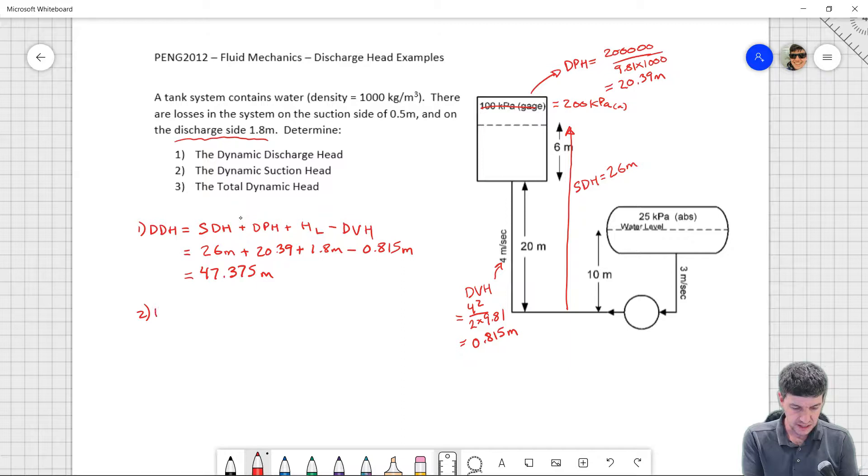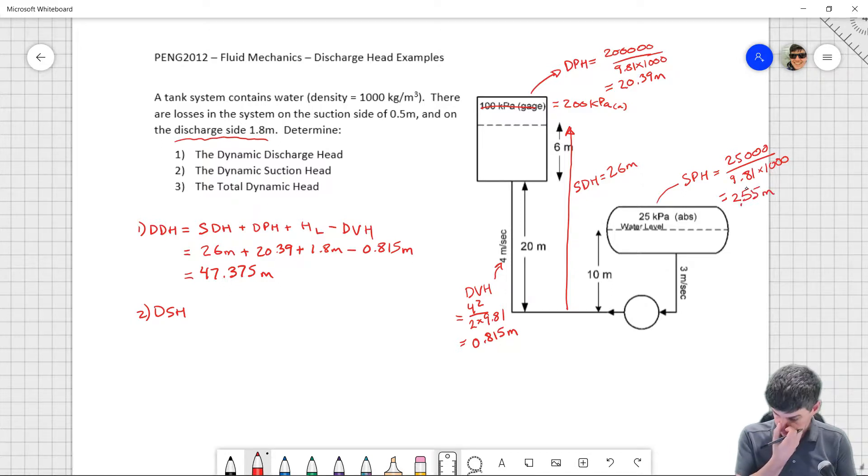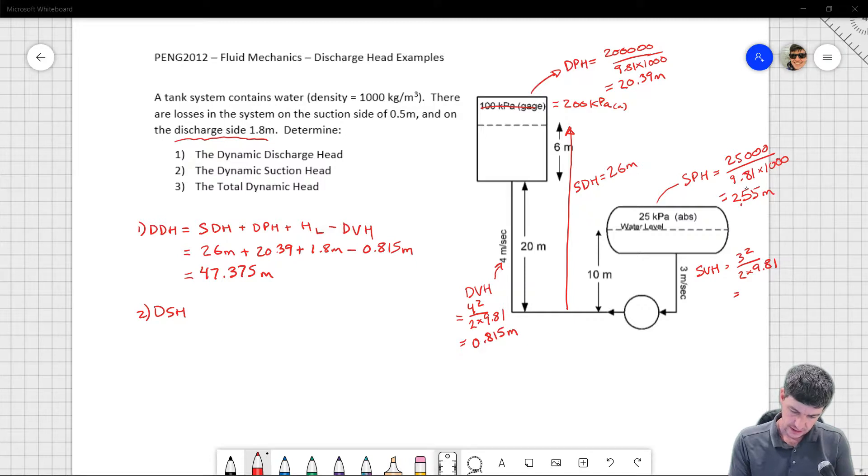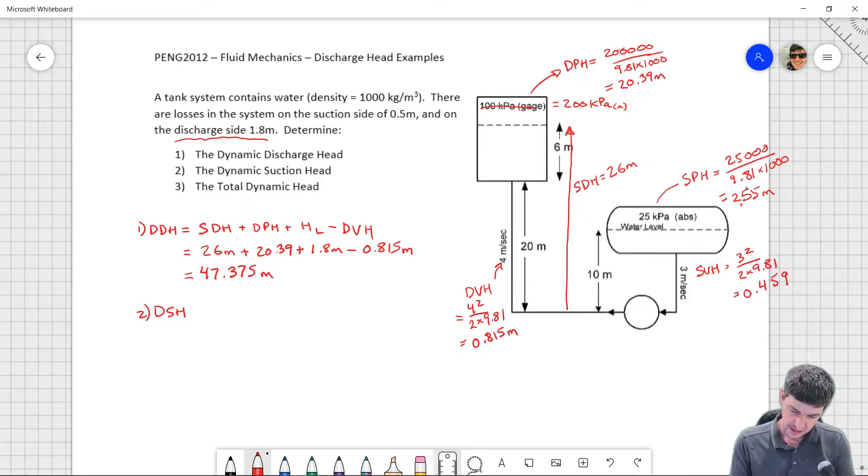Okay, so dynamic suction head. I'm going to work out I'm going to have a pressure head. So that's going to be my suction pressure head. And it's going to be equal to 25,000 pascals over 9.81 and also over the density at a thousand. And that guy is going to be worth 2.55 meters. My static height is 10 meters and I'm going to have a suction velocity head equal to 3 squared over 2 times 9.81. And that is 0.459 meters.